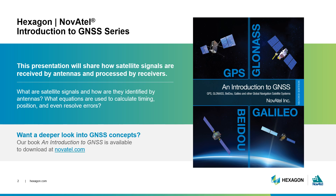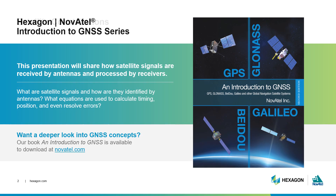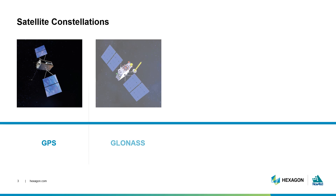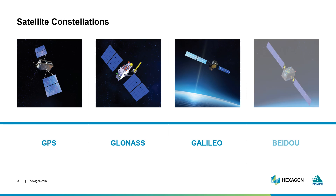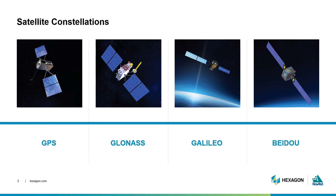Today, we will illustrate the components of a satellite's signal, how it's received by antennas, and what happens when the signal is processed by receivers. We are scratching the surface, so if you are ready for a deeper look at GNSS concepts, you can download our Introduction to GNSS book at Novotel.com. We have already explained that satellites transmit signals, but let's go into more detail.